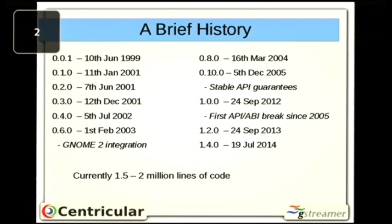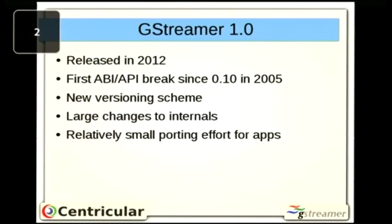We maintained 0.10 for seven years, growing the framework's capabilities while maintaining API guarantees. Then with 1.0 we finally said: there are too many things we got wrong in 2005, now's the time to break ABI and API. 1.0 was the first time people really had to do any application porting. We now have 1.0 with its own API and ABI stability guarantees, and currently one-and-a-half to two million lines of code — not counting the hundreds of libraries it can depend on.